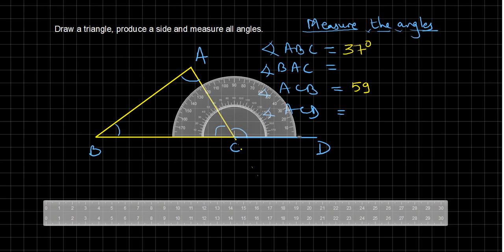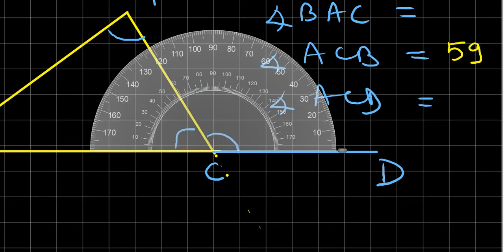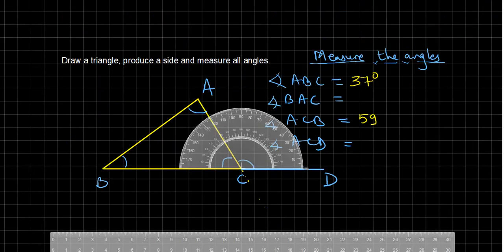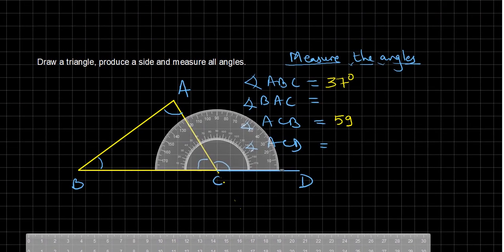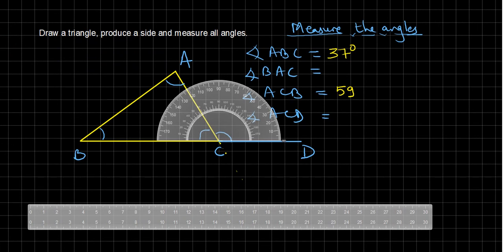We also have to measure the exterior angle ACD. Count from 0 on the external scale over here: 10, 20, 30, 40 — and this angle is more than 90. Since the perpendicular is 90 and it is more than 90, you have to judge accordingly. This comes to 120, but one more, so the exterior angle ACD is 121 degrees.